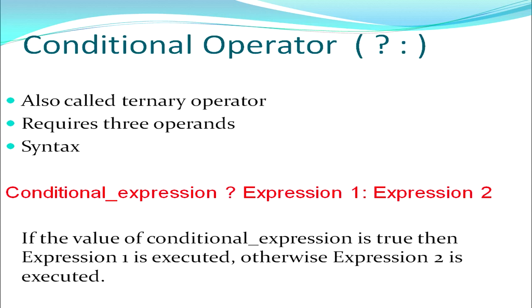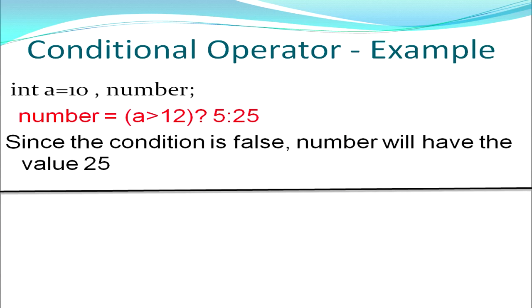Then we have the conditional operator, which is the only ternary operator in C++ — ternary because it requires three operands. The first operand is the expression followed by a question mark, the second operand is the expression executed if the condition is true, and the third operand is the expression executed if the condition is false. In the first example, the variable number will be assigned value 5 if a is greater than 12, and 25 otherwise. Since the condition is false, number gets the value 25.